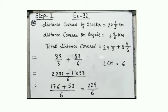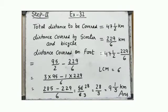That is Step 1. Step 2: total distance to be covered is 47.5 km. From that, we subtract the distance covered by scooter and bicycle — which came from Step 1 as 229/6 km. Now, you have to find distance covered on foot: 47.5 km minus 229/6 km.